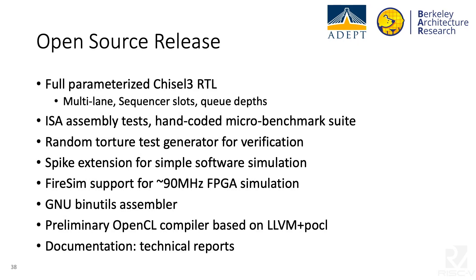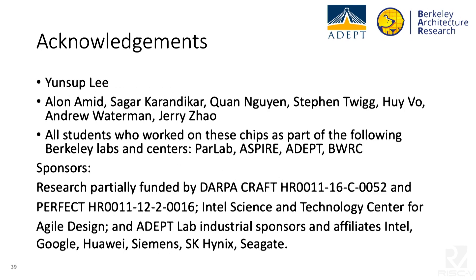We're pleased to announce that Huacha is now fully open-sourced, including the Chisel3 RTL with configurable parameters such as number of lanes, sequencer slots, and queue depths. Software includes an ISA assembly test suite and hand-coded microbenchmark suite. For verification, there's a random torture test generator and a Spike extension for software simulation. FireSim support enables mapping the design onto an AWS F1 FPGA running at 90 MHz. The toolchain includes a GNU binutils assembler and a preliminary OpenCL compiler based on LLVM. Documentation is available in published technical reports. Thanks to Jensif Lee for getting Huacha off the ground, and to all other Berkeley students involved in chip development efforts.